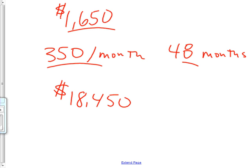So grand total, what'd you get? All right. So you get to use the car for four years and you pay $18,450 total for that. $350 a month, $1650 due at signing. That's a very typical kind of a deal.